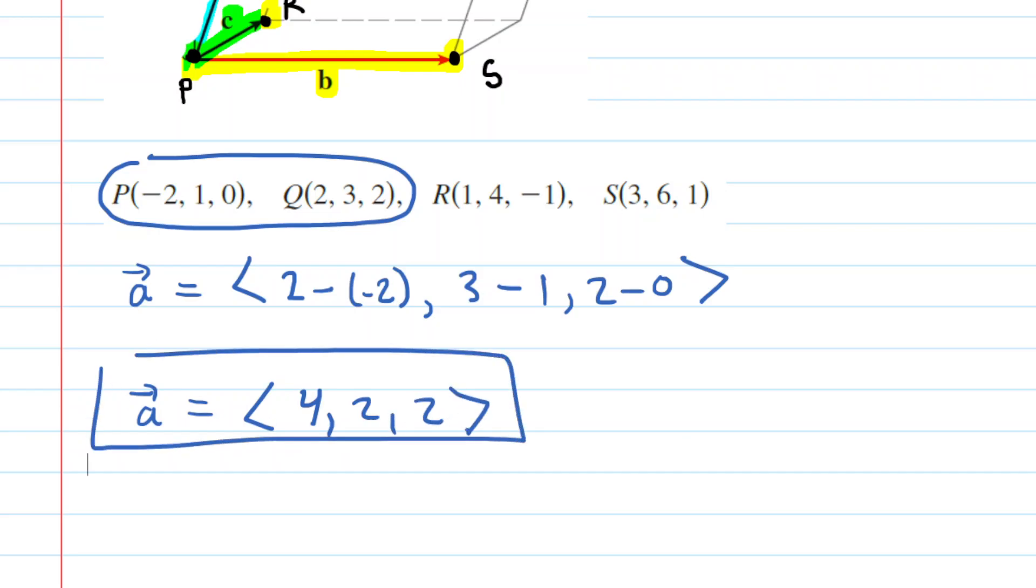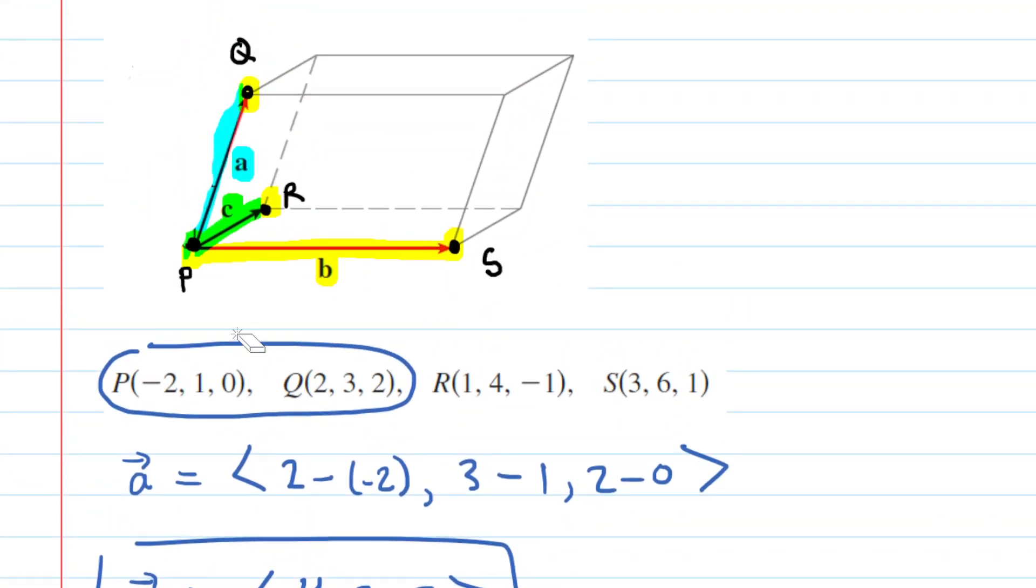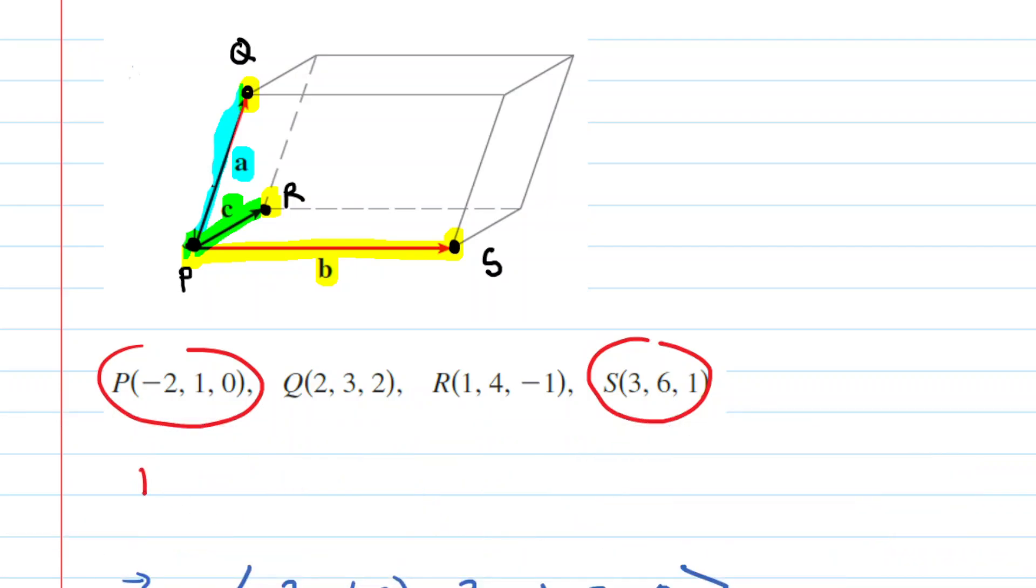We're going to circle that and come back to it shortly. But now we need a vector representation of vector B. And if you look at the diagram, vector B is formed by joining point P to point S. Now, once again, we're going to subtract the terminal point, which is S, by the initial point, which is P. So we'll start out with the x-coordinates. We would have 3 minus negative 2, that's 3 plus 2. Then we have 6 minus 1, and then we have 1 minus 0. When we simplify this for vector B, we will get 5, 5, 1.